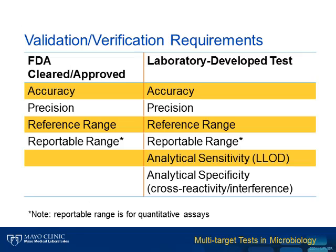The Clinical Laboratory Improvement Act, or CLIA, provides requirements that laboratories must follow when characterizing the performance of their tests. More work is required for laboratory-developed tests. FDA-cleared and approved tests must be characterized in terms of accuracy — which includes sensitivity and specificity — precision, reference range, and reportable range. Laboratory-developed tests, in addition, need to be evaluated for analytical sensitivity or lower limit of detection, as well as analytical specificity, which includes cross-reactivity with other targets and interferences from specimen components. Note that the reportable range applies to quantitative assays only.